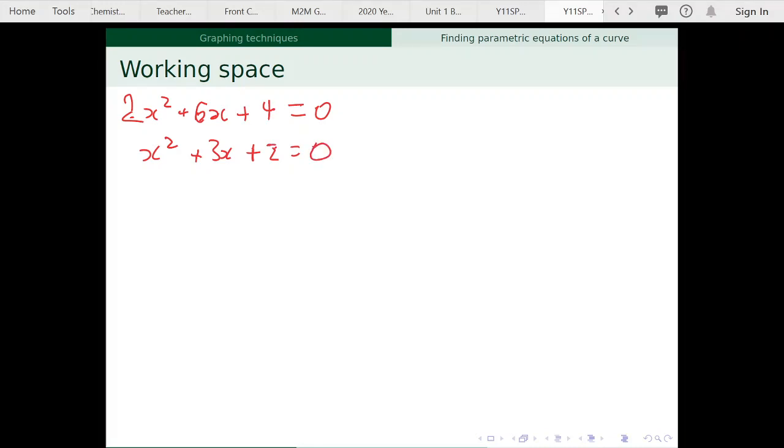Now, if we think about that, what would times to make 2 and add to make 3, just doing our quadratic trinomials, just nice monic ones. So it's x plus 2, x plus 1, equals 0.